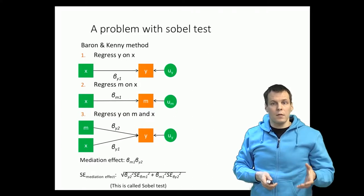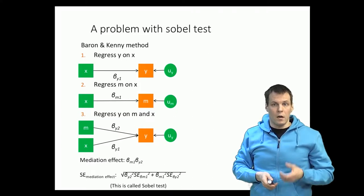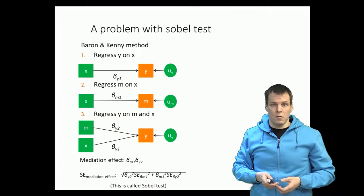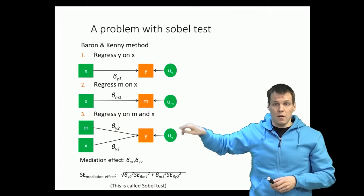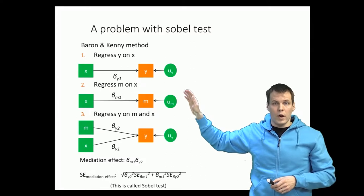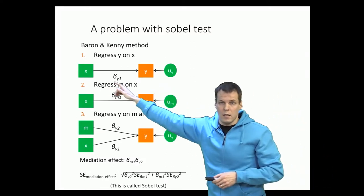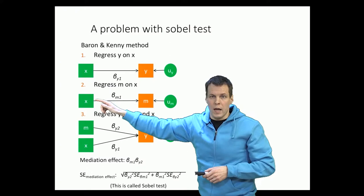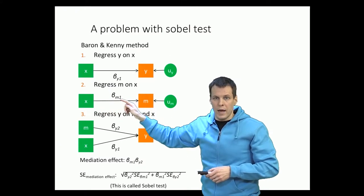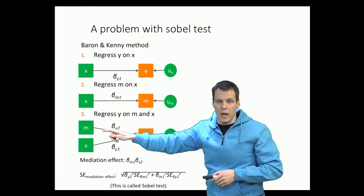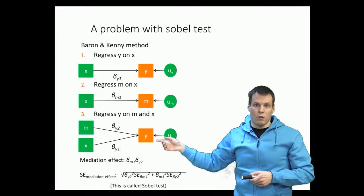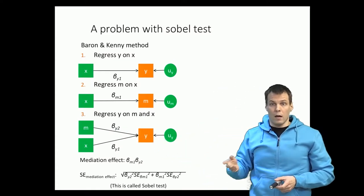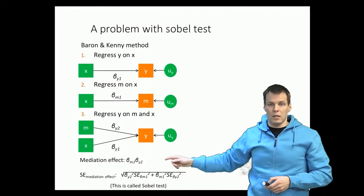The reason why that is the mediation effect is because of the tracing rules of path analysis. When we have full mediation, the way we get from x to y is go from x to m, so we get beta m1, and then we go from m to y, so we get beta y2, and we multiply them together because we multiply everything along the path.